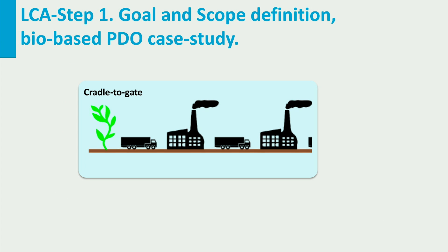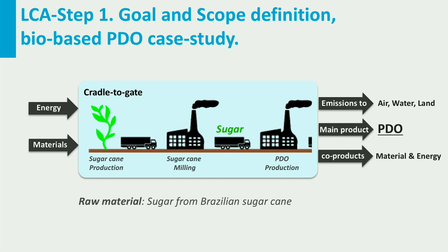Biobased PDO is produced through fermentation of sugars, which in turn can be obtained from various sugar or starchy crops, or from lignocellulosic materials, also known as second generation feedstocks. For this lecture, the raw material selected is sugar from the Brazilian sugarcane industry. The functional unit is the basic unit to perform the study and for any comparison. In this case, the functional unit is one kilogram of PDO at the same quality conditions of the petrochemical PDO.